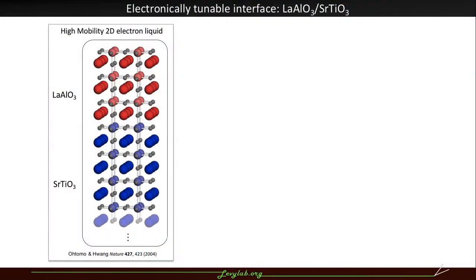The system that we work with is the oxide heterostructure lanthanum aluminate strontium titanate, where when you grow a thin layer of lanthanum aluminate on strontium titanate, there's a high-mobility two-dimensional electron liquid that forms at the interface between the two materials.